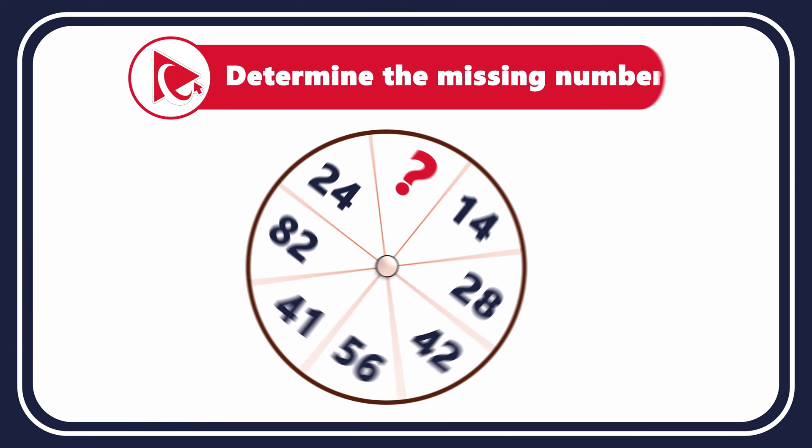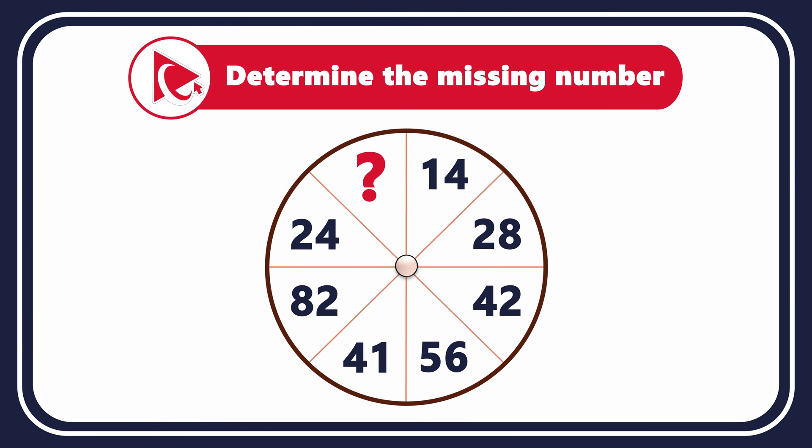You're presented with a circle which is broken down into eight equal parts. Each part has a number, and the numbers are 14, 28, 42, 56, 41, 82, 24, and then comes the missing number.